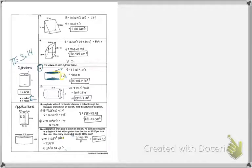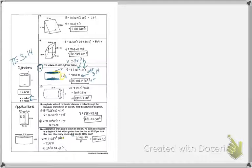Using the formula: radius squared times height. Substitute in the values. Using 3.14 for pi, this would look like 4,860 times 3.14, and your answer would be 15,260.4.